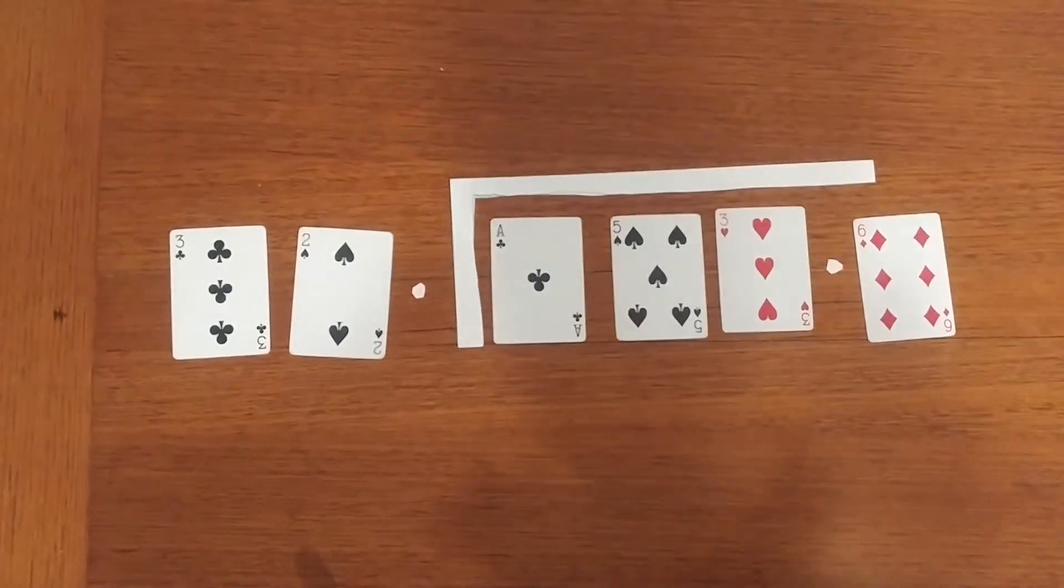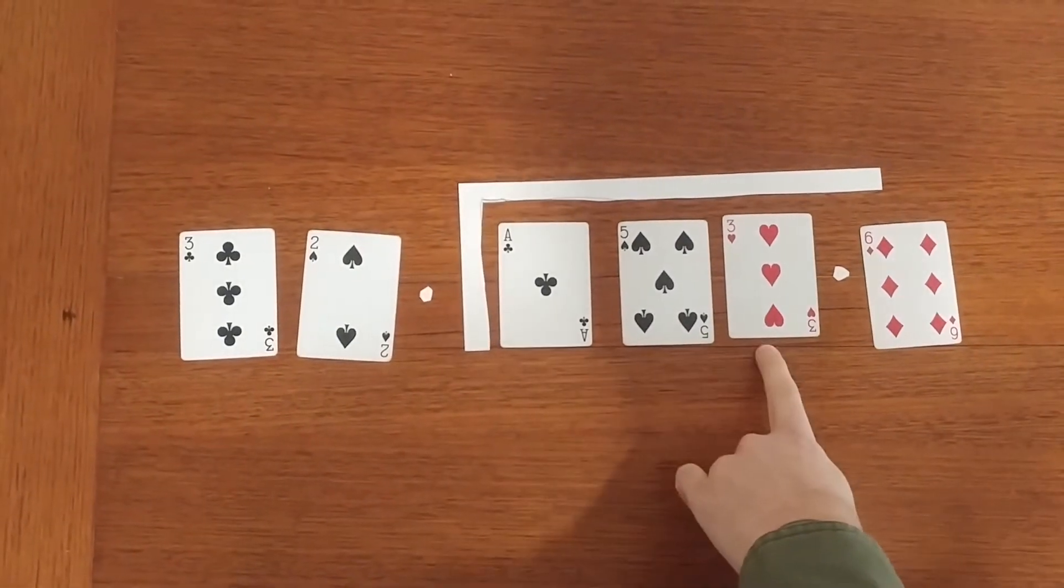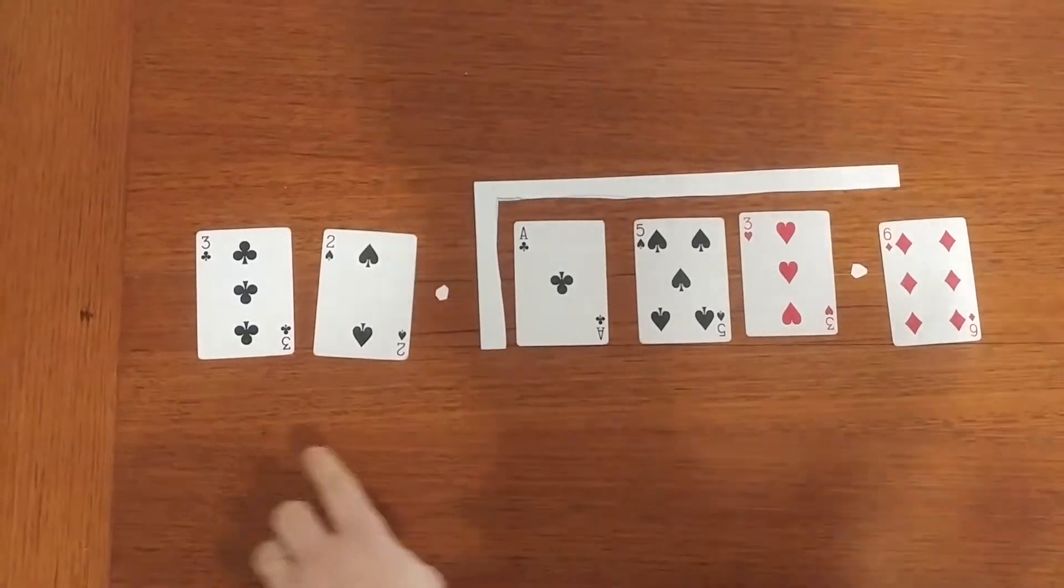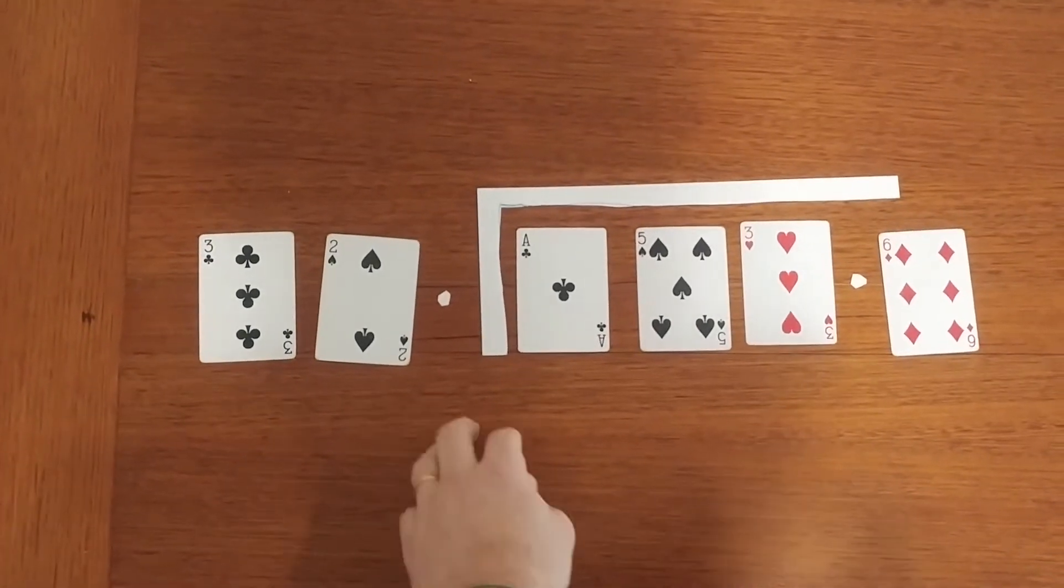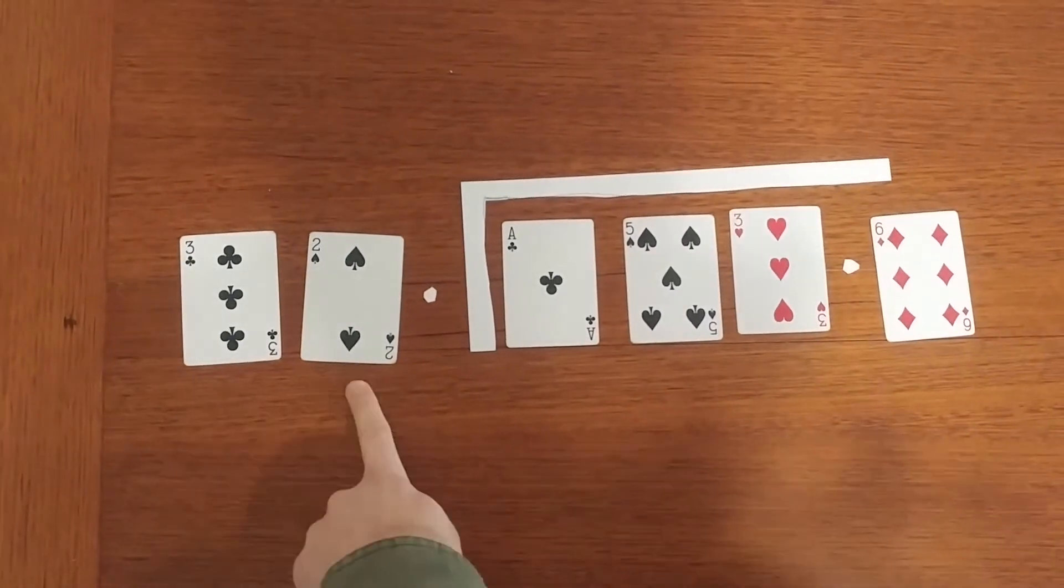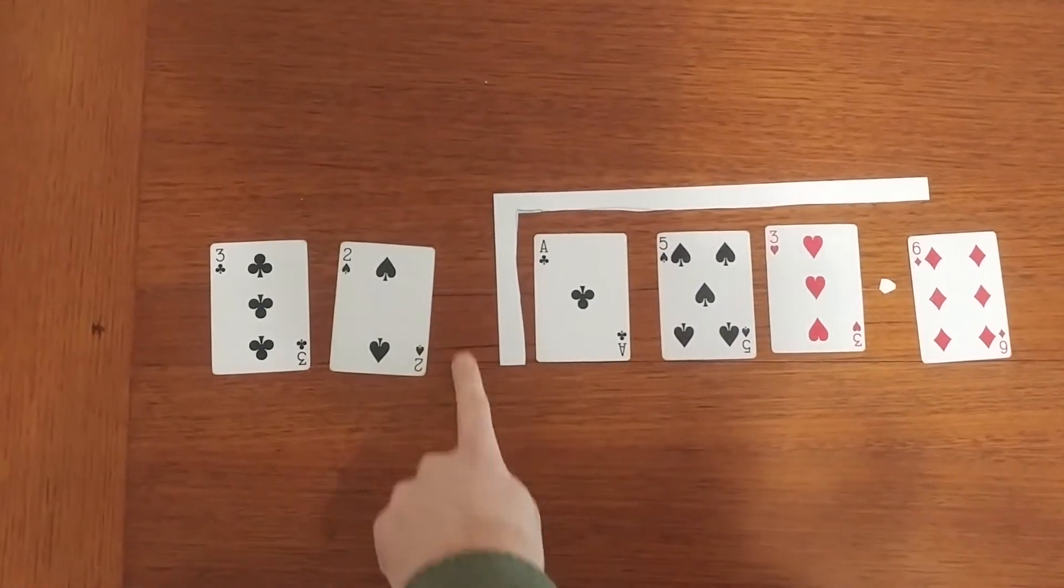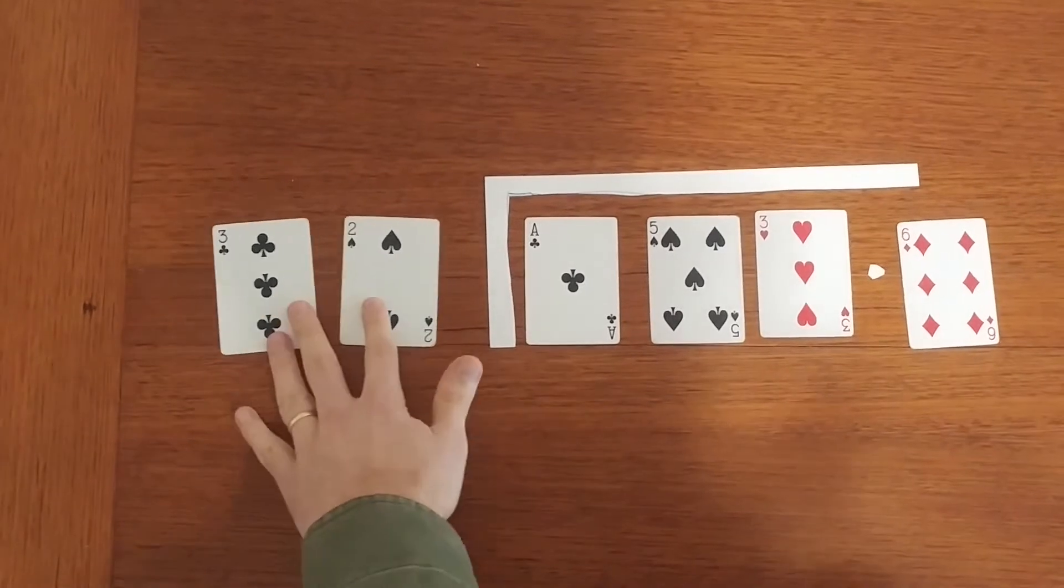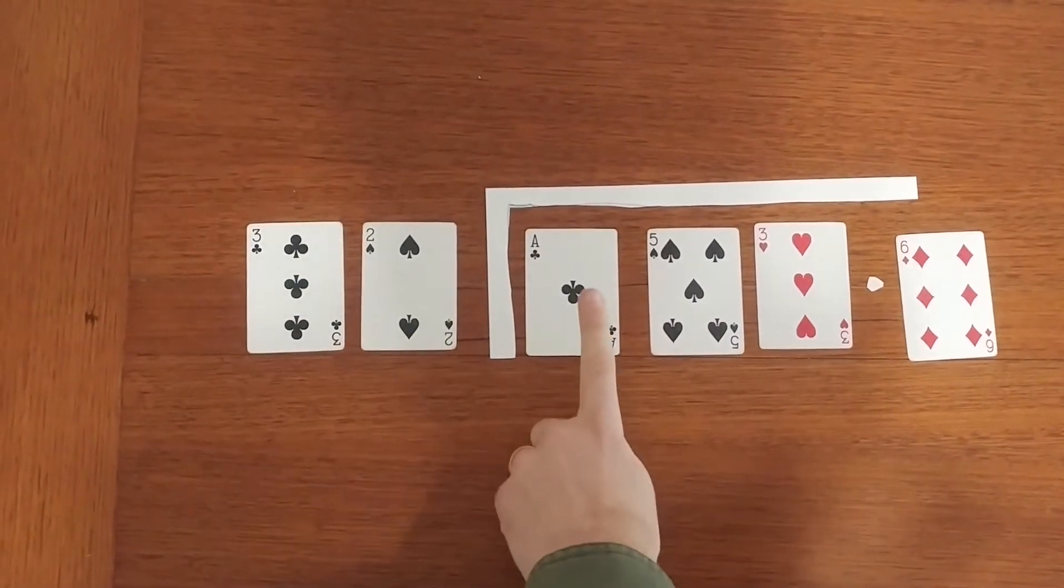So our new number is 32 into 153.6 or what we'd say is 153.6 divided by 32. I don't need this decimal anymore because it's invisible when there's no other number after the decimal point.